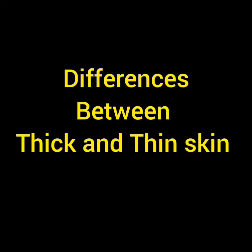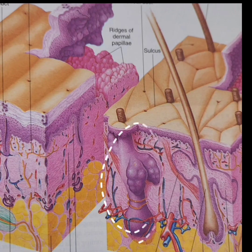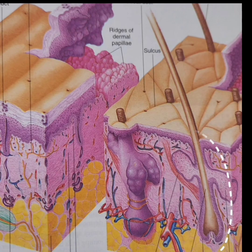Comparing thick and thin skin: whether thick or thin, keratin is always present, though keratin formation is more pronounced in thick skin. Pilosebaceous units are confined to thin skin, while sweat glands are present in both varieties.